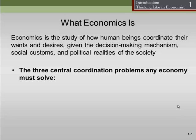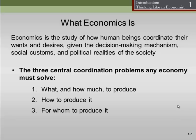But no matter what economic system we use, and no matter what our political, societal, or social situations are, we essentially have three coordination problems that any economy must solve. What do I mean by coordination problem? Well, essentially it means getting the right stuff to the right people at the right time. How do we do that? Well, first of all, we need to know what and how much to produce — what stuff to make and how much of it to make.